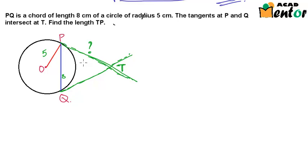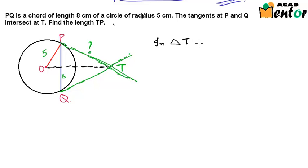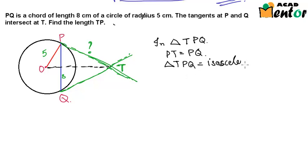There are two ways of going about this question — either we can use similarity of triangles or we can use the Pythagoras theorem. Let's look at both of them. Let me first join OT. In triangle TPQ, PT is equal to QT, and hence triangle TPQ is isosceles.